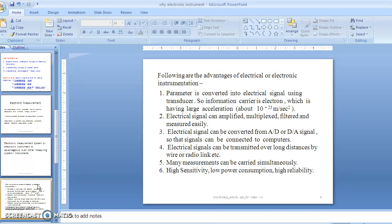The electrical signal from the transducer can be converted into digital form. The electrical signal can be transmitted over long distances with wires or radio links. Many measurements can be carried out simultaneously. Finally, electronic measurement systems have high sensitivity, low power consumption, and high reliability as compared with pneumatic, mechanical, or hydraulic measurement systems.